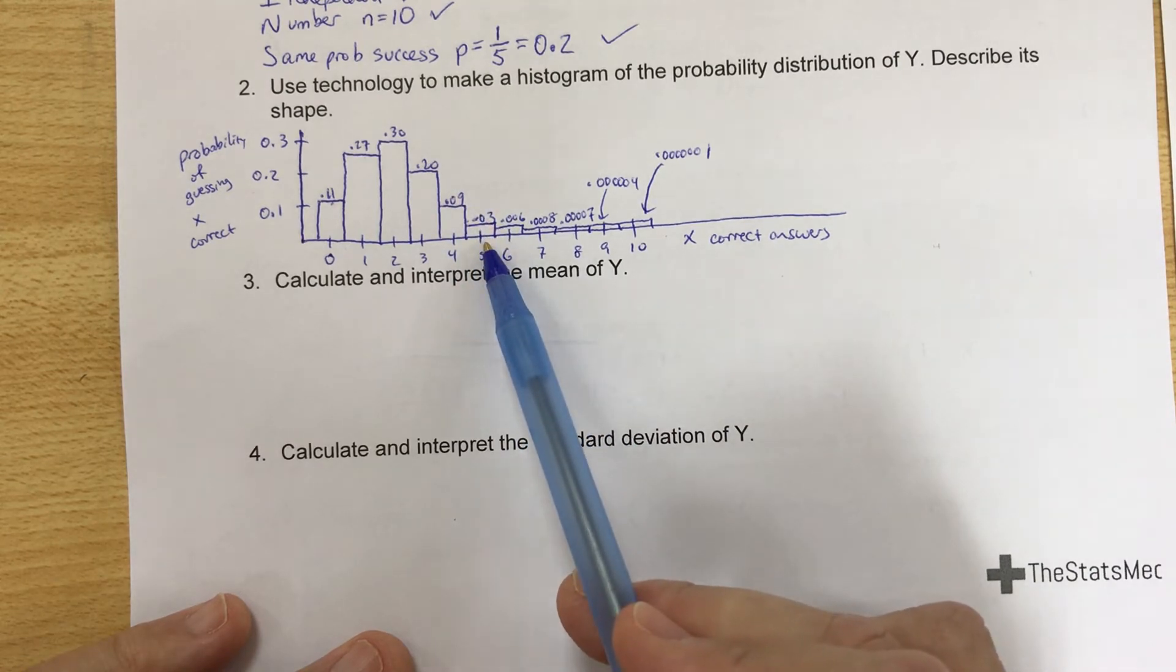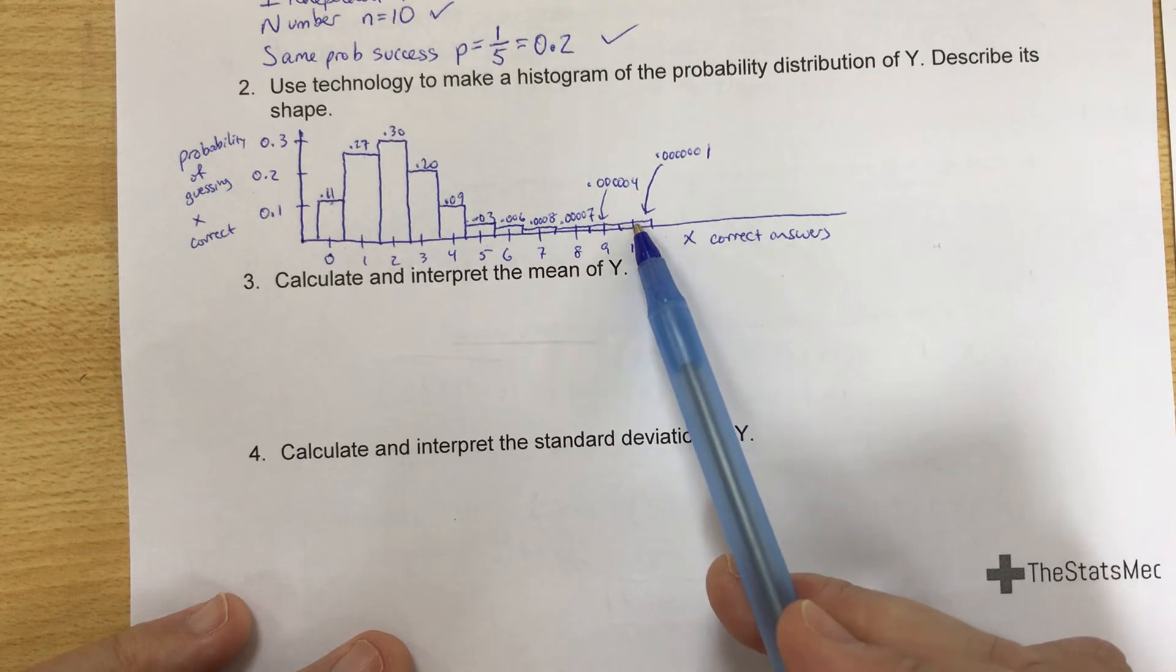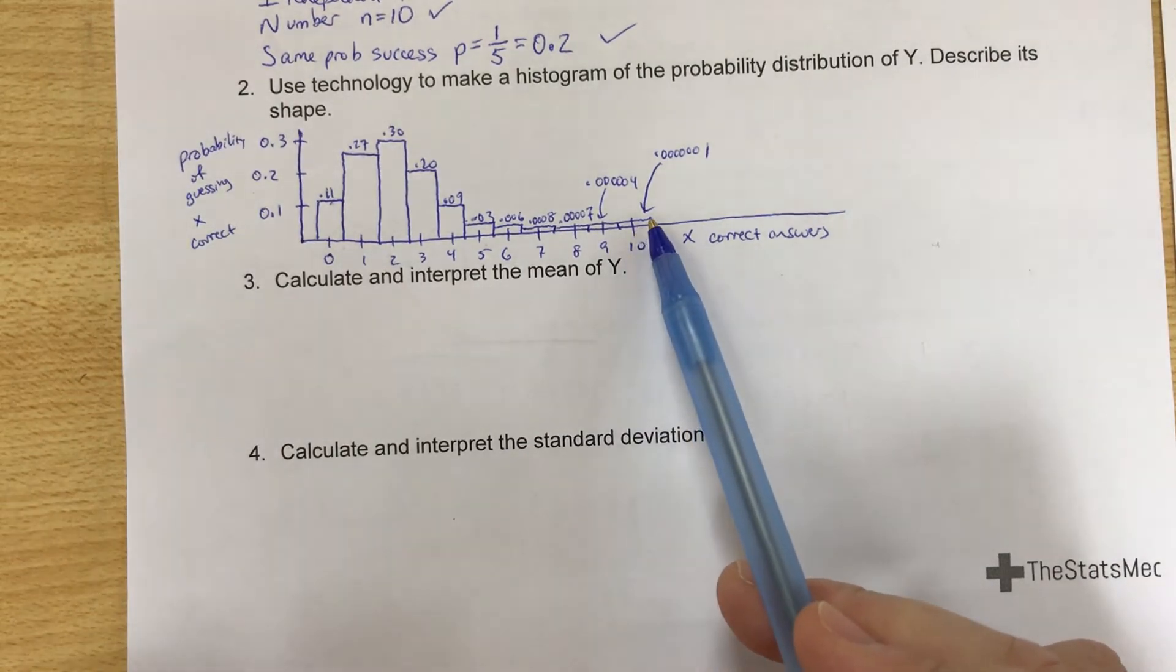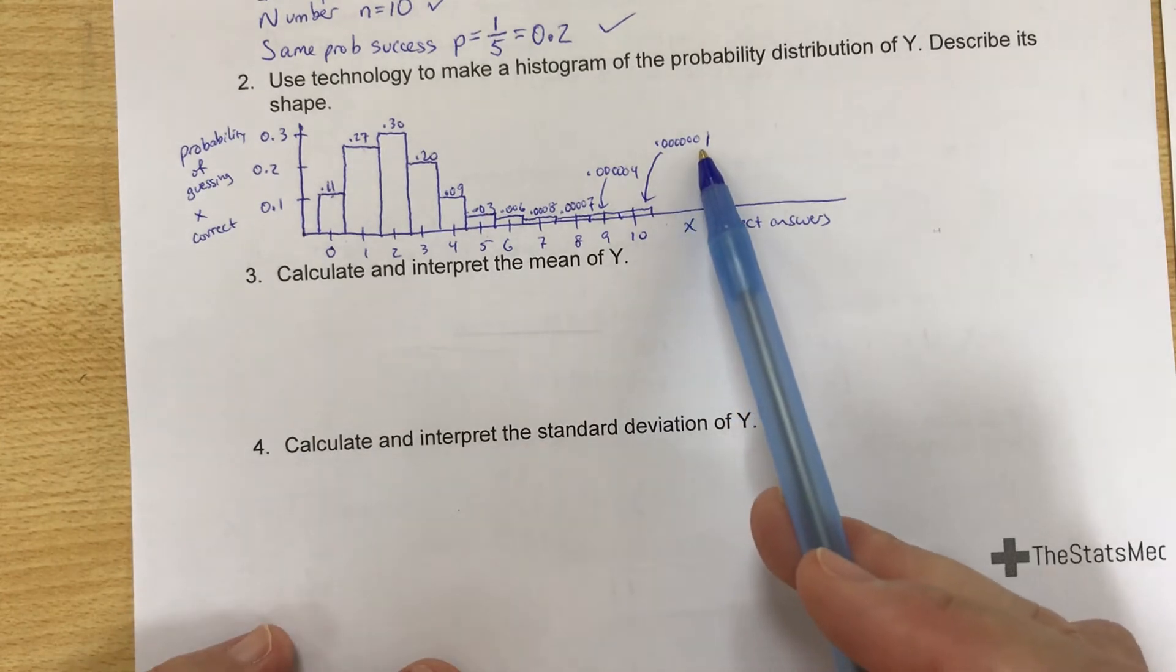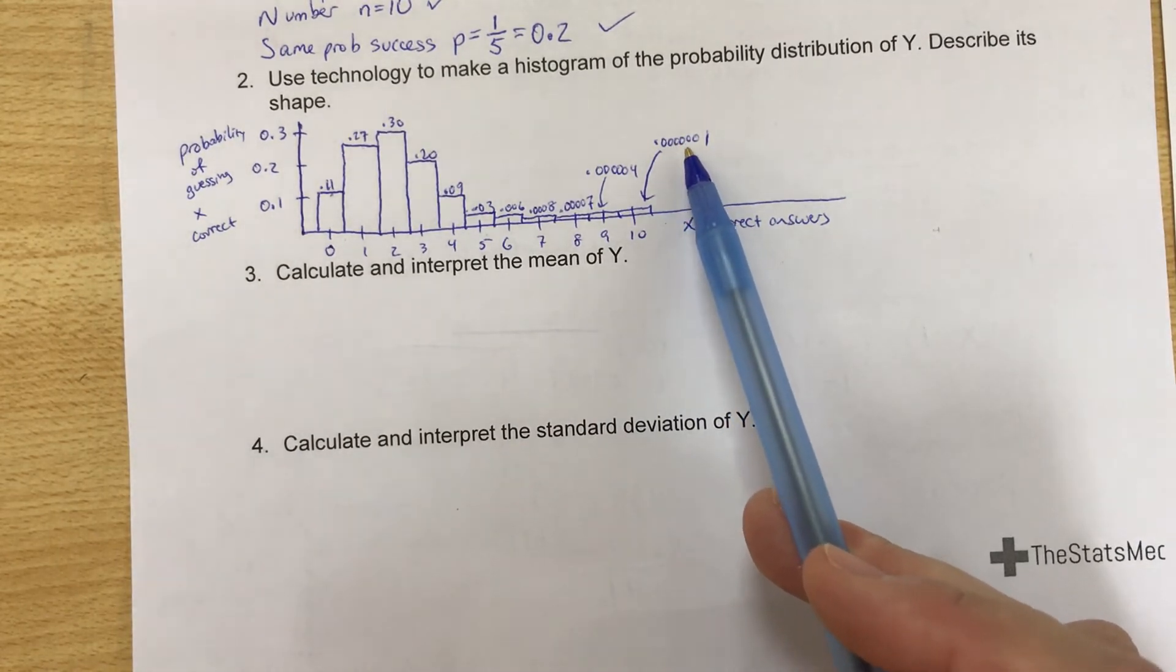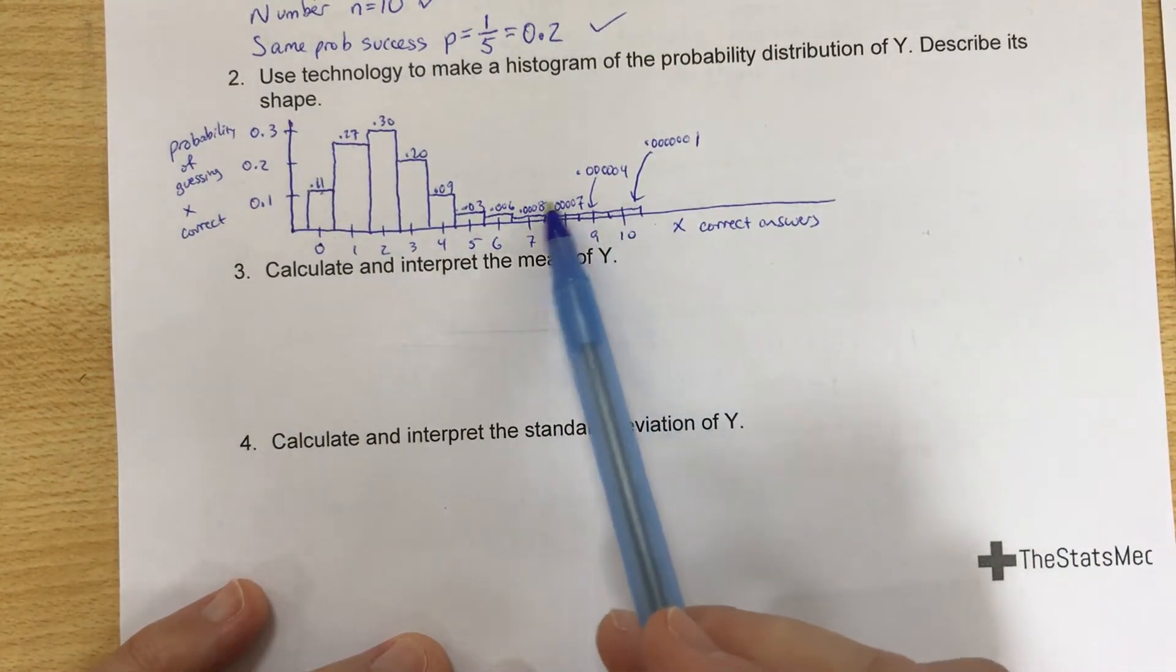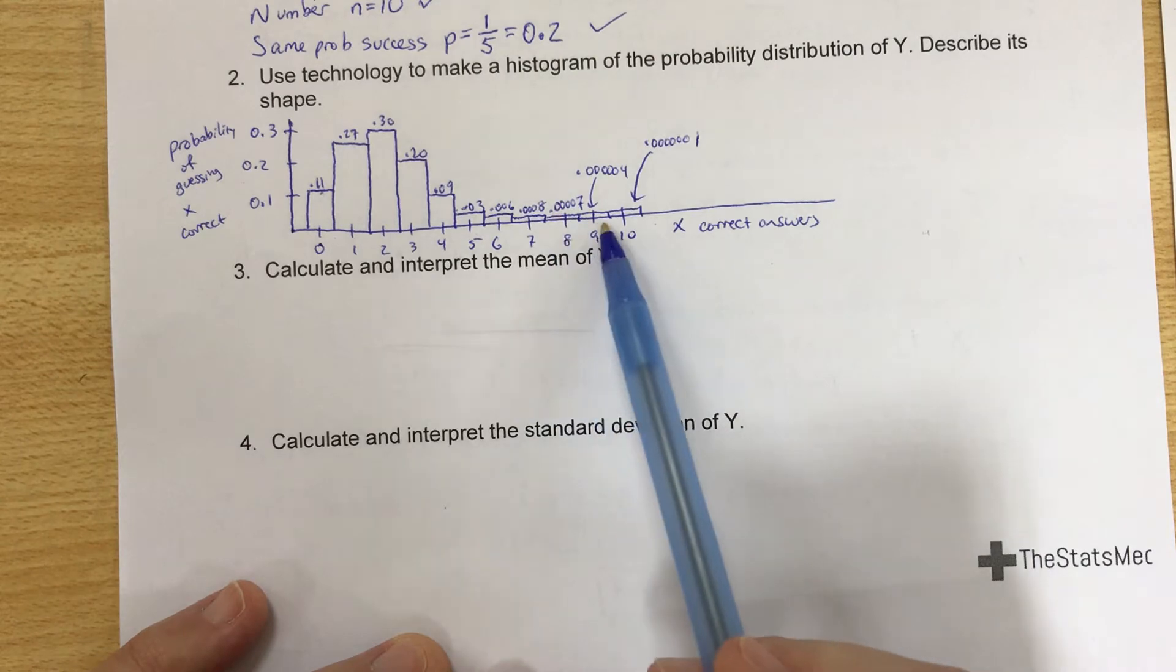Notice how quickly this drops off. The probability of getting half of the questions right is only 0.03, and then 0.006. By the time we get to 10 questions right, the probability that you would guess all of these correct is one in 10 million, 0.0000001. So basically, if you're guessing, you have no chance of guessing correctly this many times.